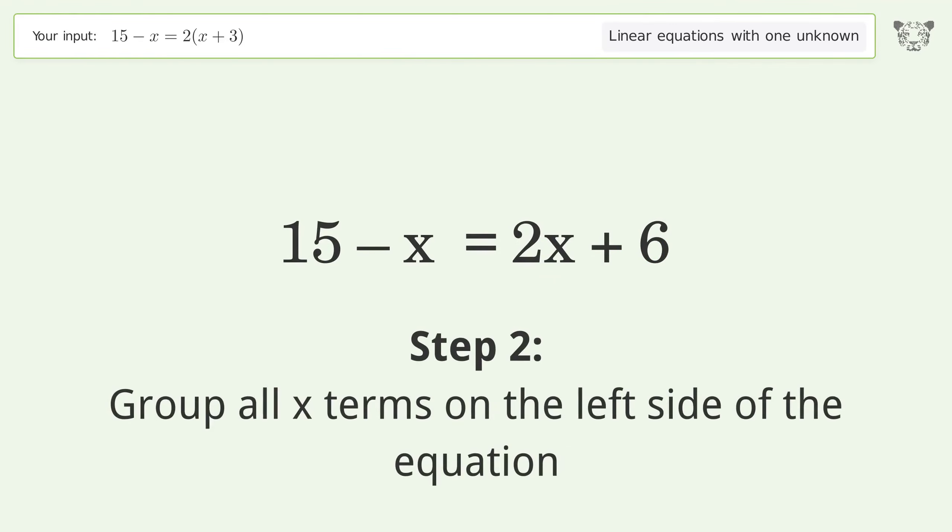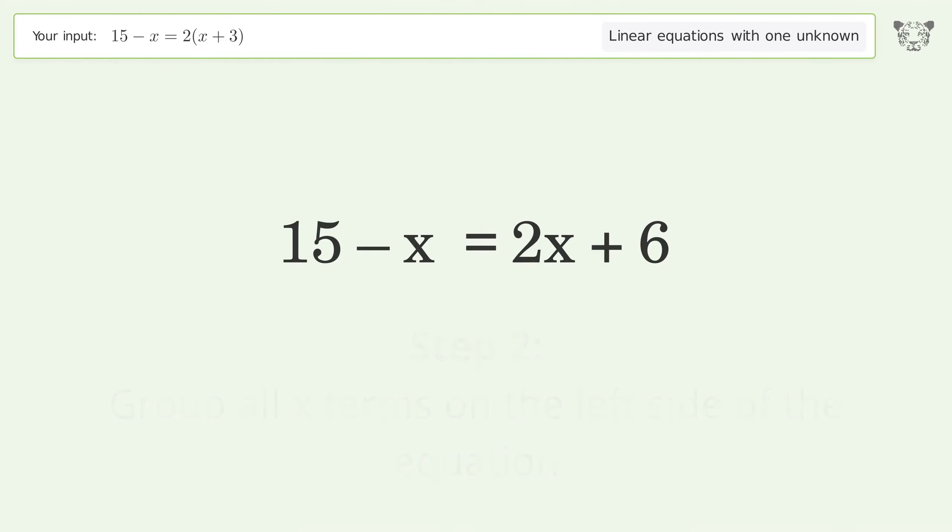Group all x terms on the left side of the equation. Subtract 2x from both sides. Group like terms. Simplify the arithmetic.